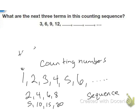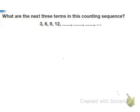So let's start with the problem at the top. It says: what are the next three terms in this counting sequence? The sequence goes three, six, nine, twelve. Each time we are increasing by three. Three plus three is six, six plus three is nine, nine plus three is twelve. So the next term should be twelve plus three, which is fifteen. Fifteen plus three is eighteen, and eighteen plus three is twenty-one.